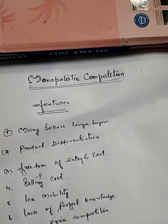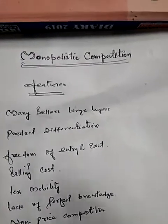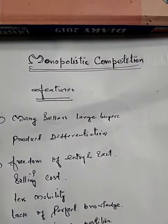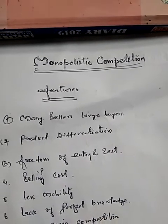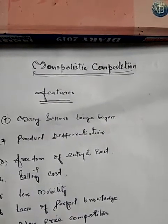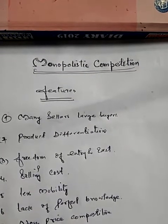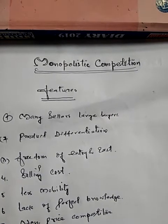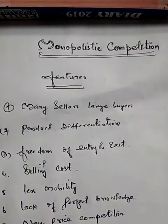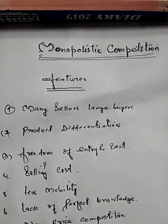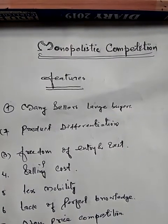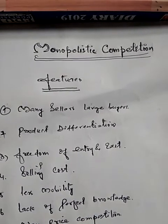Today let's discuss the various features or characteristics of monopolistic competition. The first feature is many sellers. Under monopolistic competition we have many firms, but the size of each firm is small and each firm has a limited share of the market. Buyers are large in number, so no single firm can affect the market price, yet each firm controls its own share of the market.